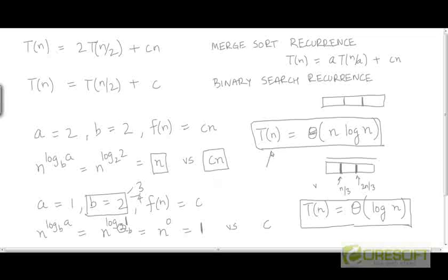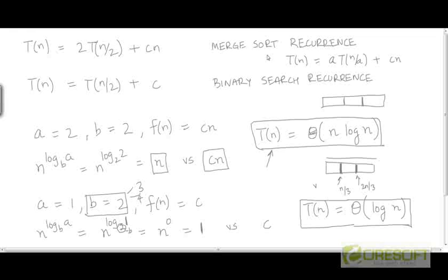This means the complexity of merge sort would remain Θ(n log n) even if we divide the array into three, four, five, or any constant number of parts at every step. So generic versions of merge sort and binary search have the same asymptotic time complexity as the standard implementations, and we were able to conveniently show that using Master Theorem.